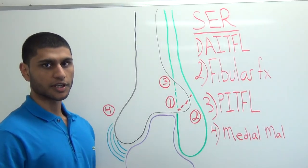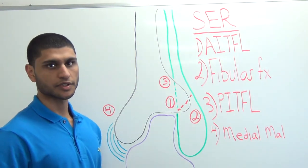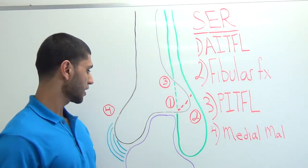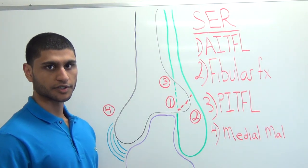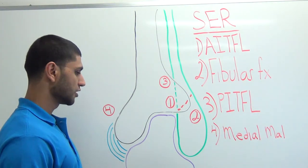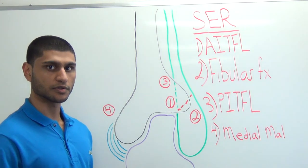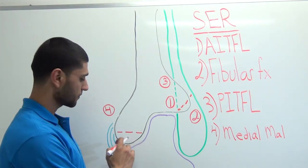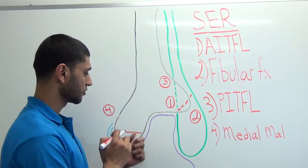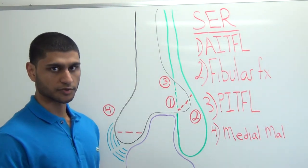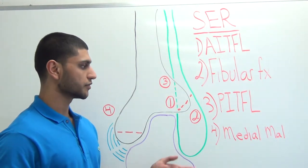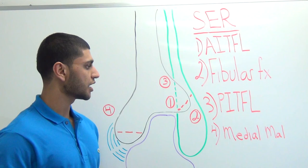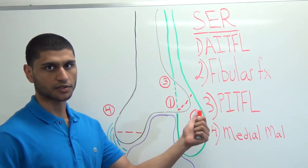In SER3, there's injury or pull of the posterior inferior tibiofibular ligament, with the same potential injuries as PER4. In SER4, there is pull or injury of the deltoid ligaments — like PER1 and PAB1, you can see an avulsion fracture of the medial malleolus or a tear of the deltoid ligaments increasing the medial gutter space. The key difference between SER and PER is the level of the fibular fracture: in PER it's a high fibular fracture making it a Danis-Weber C, whereas in SER it's at the level of the ankle joint — a Danis-Weber B.